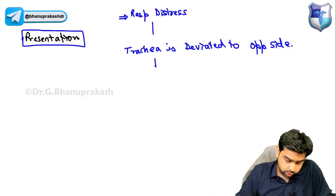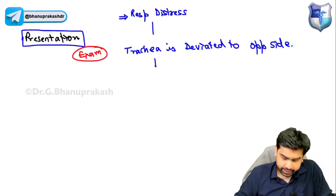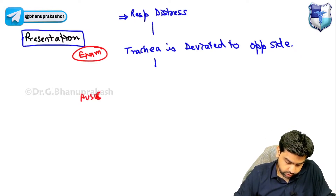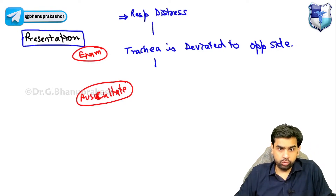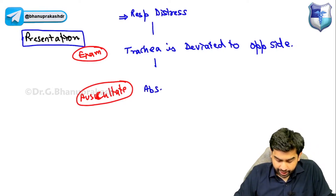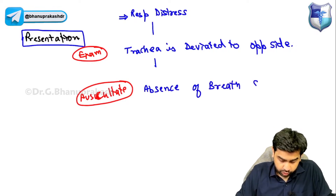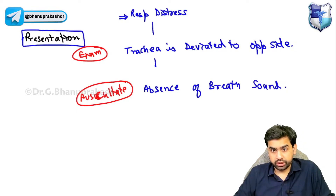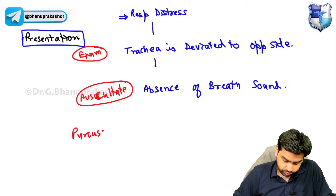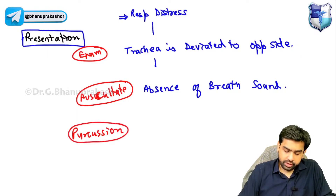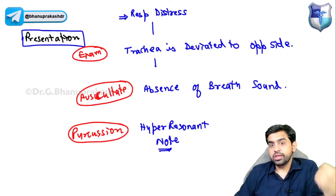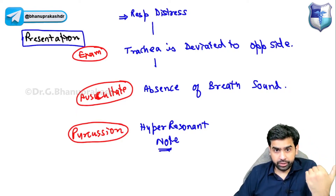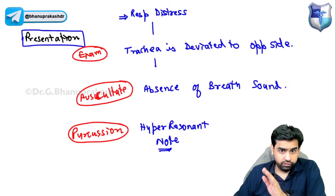On examination, the next step is to auscultate. On auscultation, you're going to find an absence of breath sounds. Finally, on percussion, you're going to find a hyper-resonant note. So the patient presents with respiratory distress, trachea deviated towards the opposite side, absence of breath sounds on auscultation, and a hyper-resonant note on percussion.